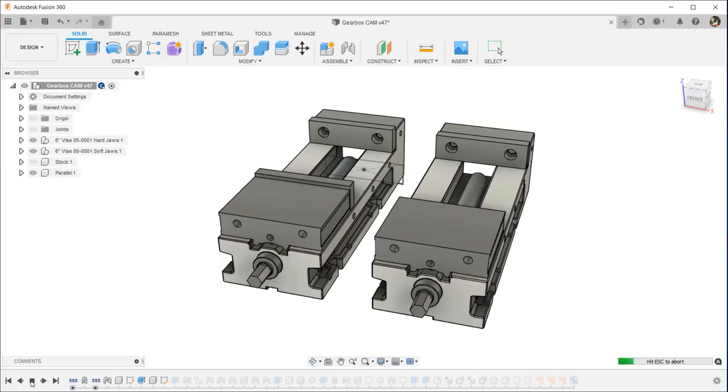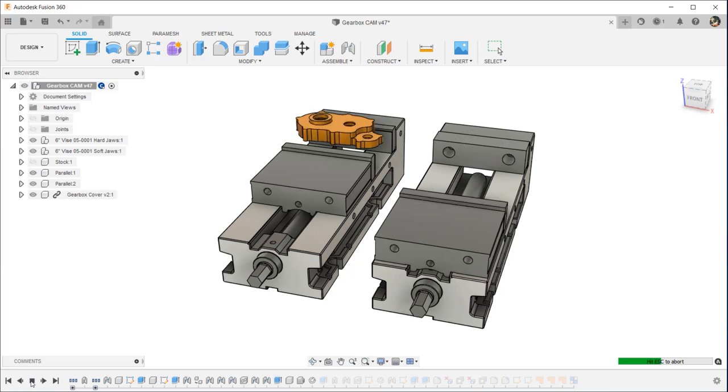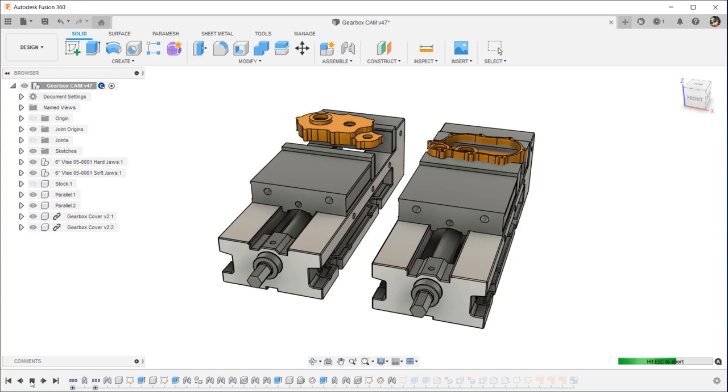One-piece flow means that for every cycle, a complete part will come out. This part requires two operations, so I will use two Haas vices side-by-side for Op 1 and 2, which can be found in the Fusion 360 workholding library.